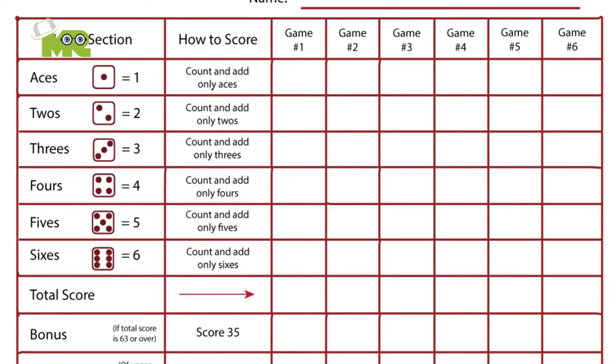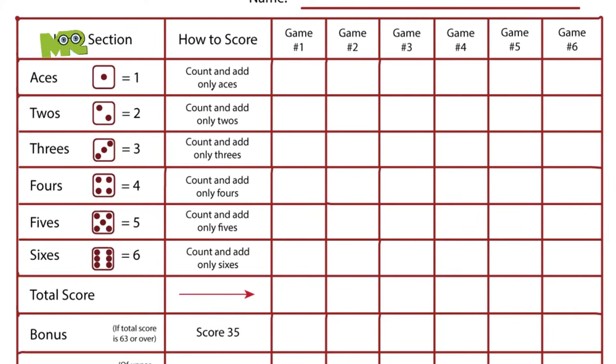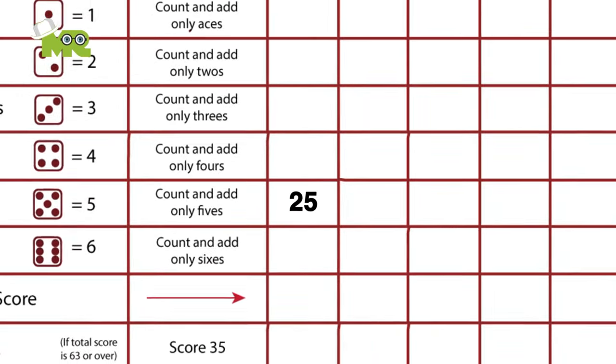A player is required to total the value of their chosen number rolled and write it in the top six boxes. For example, rolling five fives will get them 25 points, and they'll write it in the five section on the top six boxes.